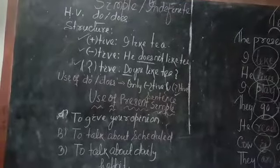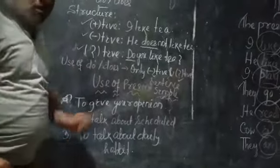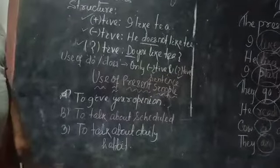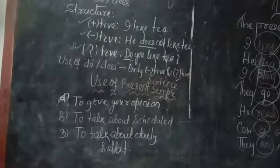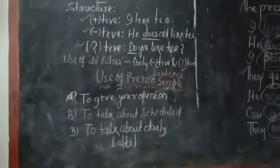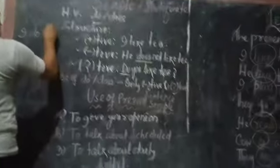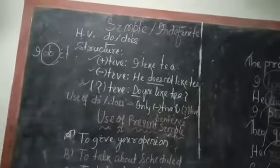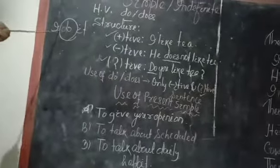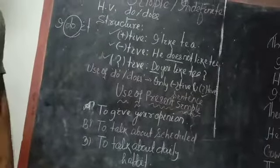But in positive, we may use do as main verb. Just you see, I do it. Here, do is main verb instead of helping verb. But in these sentences, do and does are helping verb.